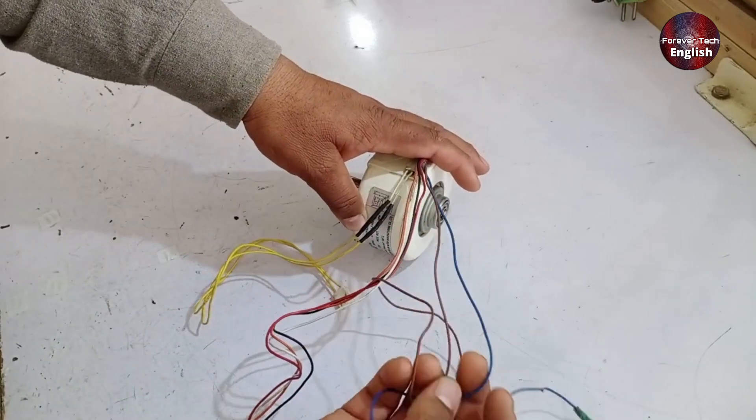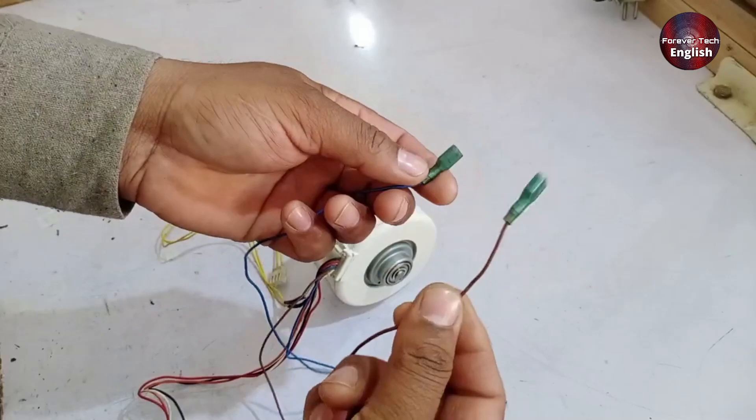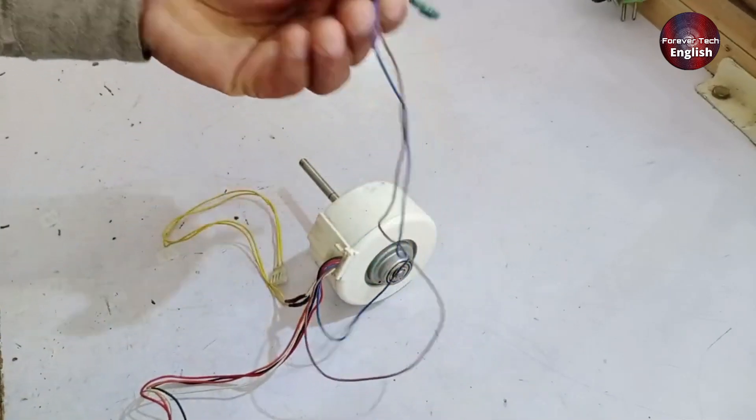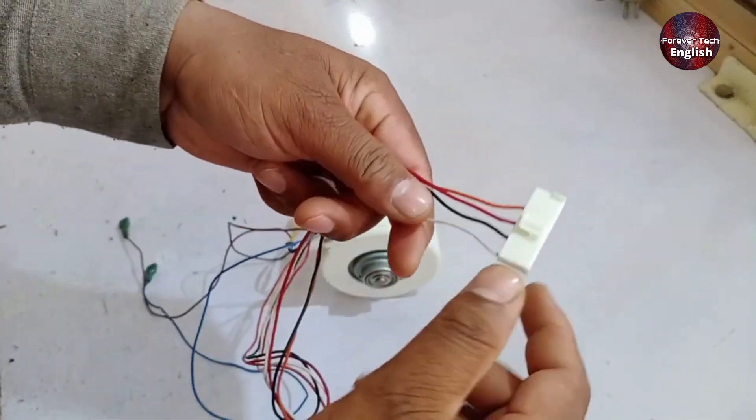Next, let's look at the next two wires. These are usually connected to capacitors, one wire for the neutral and the other for the start winding. So that accounts for two more wires. Now, we have four remaining wires.